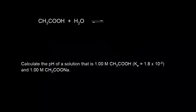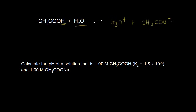Let's say we have a solution of acetic acid. We know what's going to happen in solution. Acetic acid is going to donate a proton to H2O to form H3O plus, or hydronium, and the conjugate base to acetic acid, which is acetate, CH3COO minus.